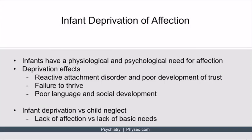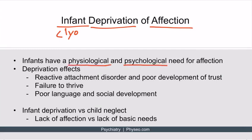An infant is a child under the age of one, so less than a year old. Deprivation means something essential the child is not getting — in this case, the deprivation of affection. To understand why this pathology is significant, you need to know that infants have a physiological and psychological need for affection. So let's talk about the effects of this deprivation.